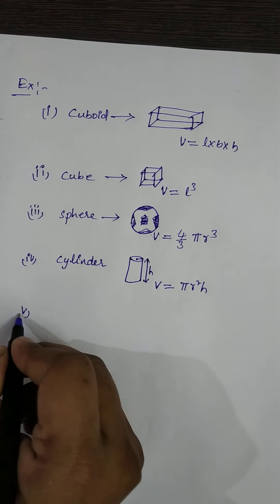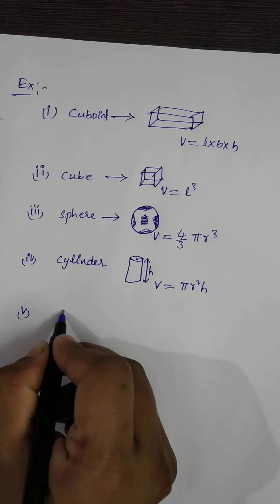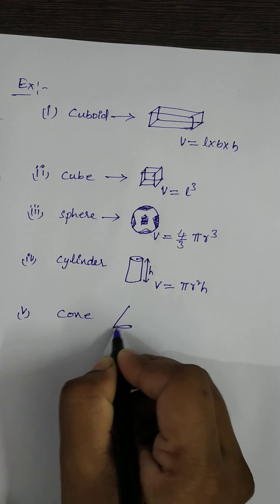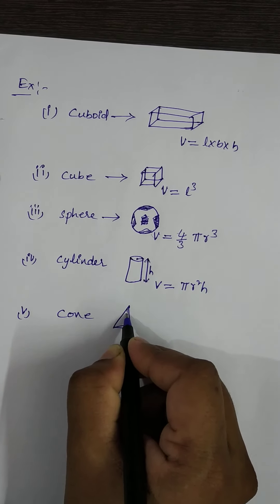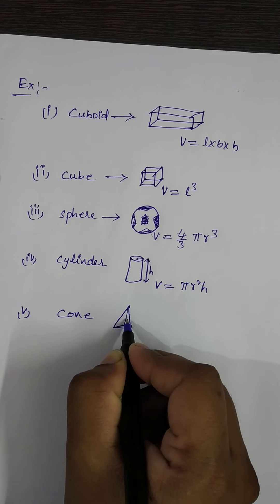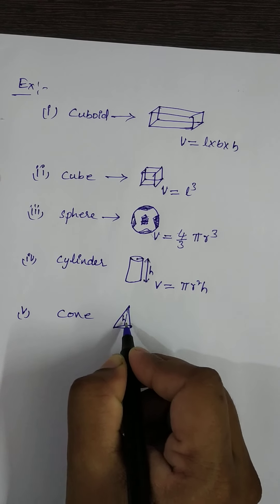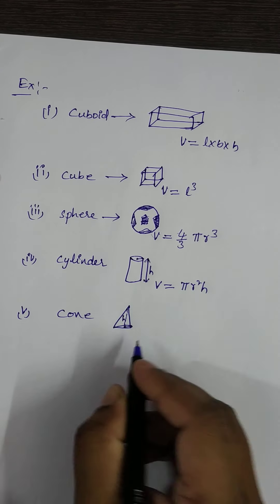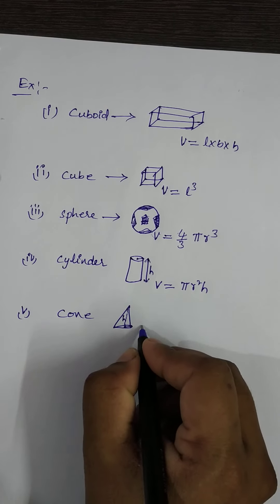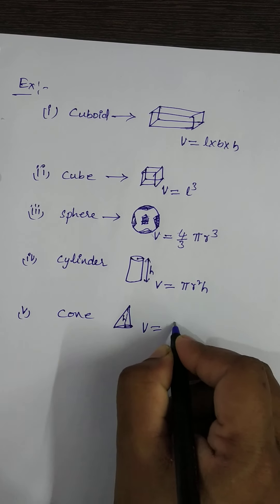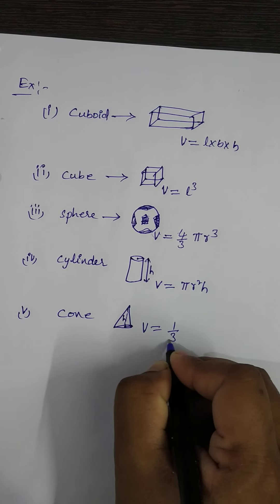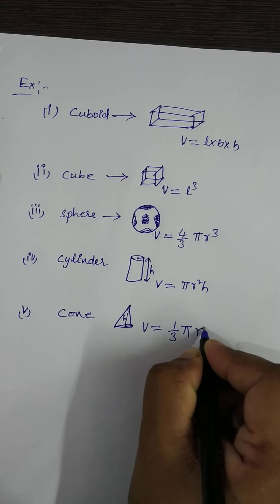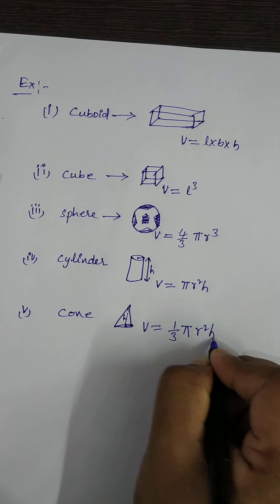The fifth example is a cone, which has a height and a radius. Volume of cone = (1/3) × π × r² × h.